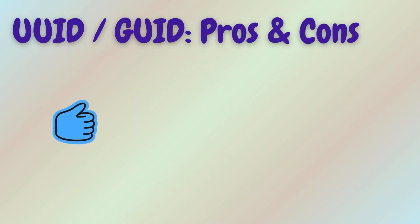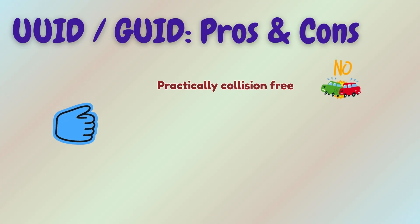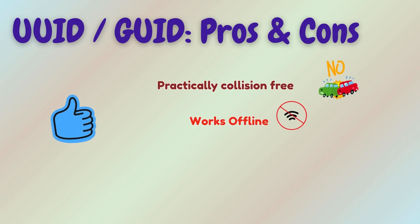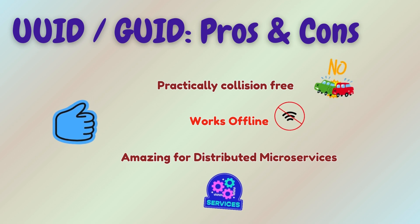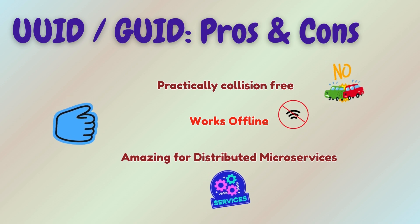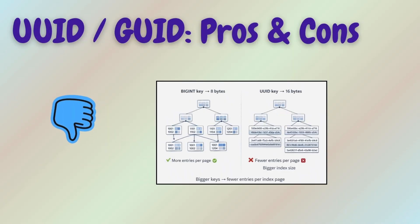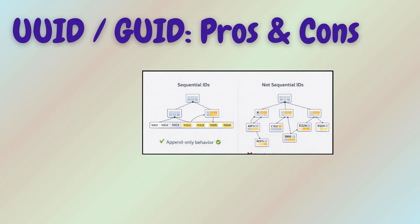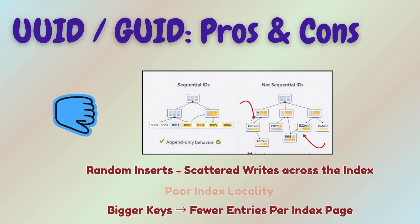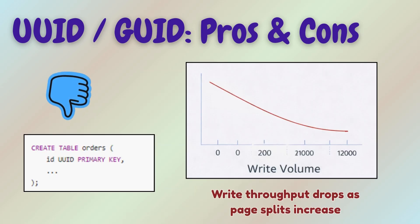Let's quickly go over the pros and cons of this approach. The pros are: practically collision-free, works offline, and amazing for distributed microservices. But the downside? UUIDs are 128 bits, making them heavy for indexes. They are not sequential, leading to poor index locality.